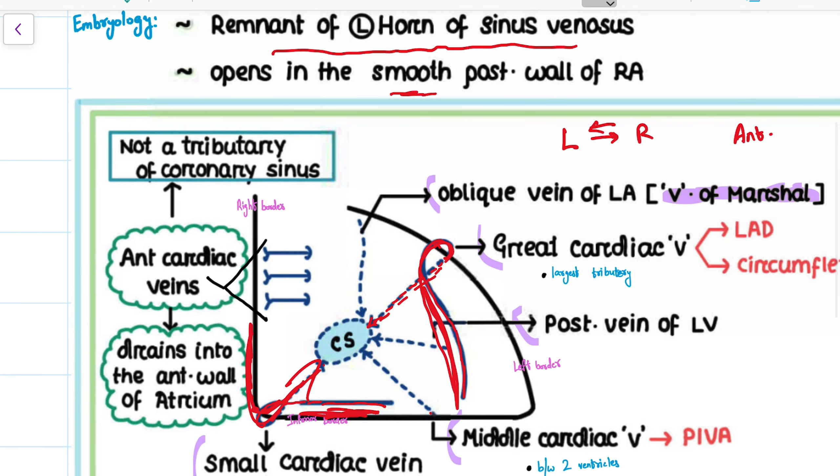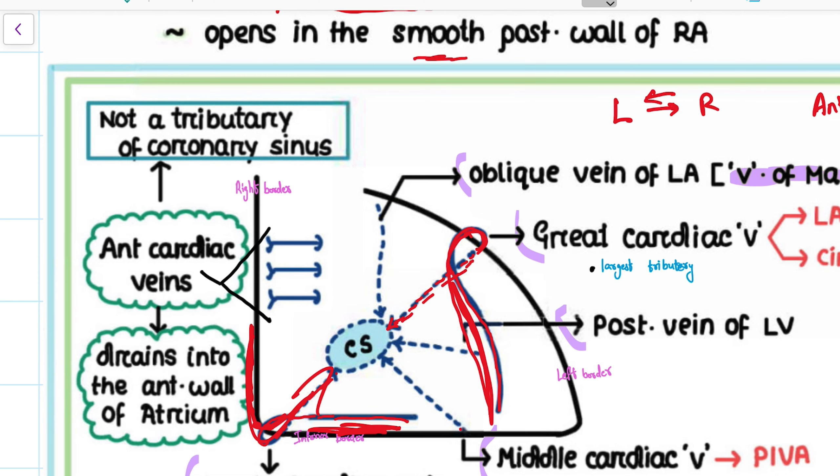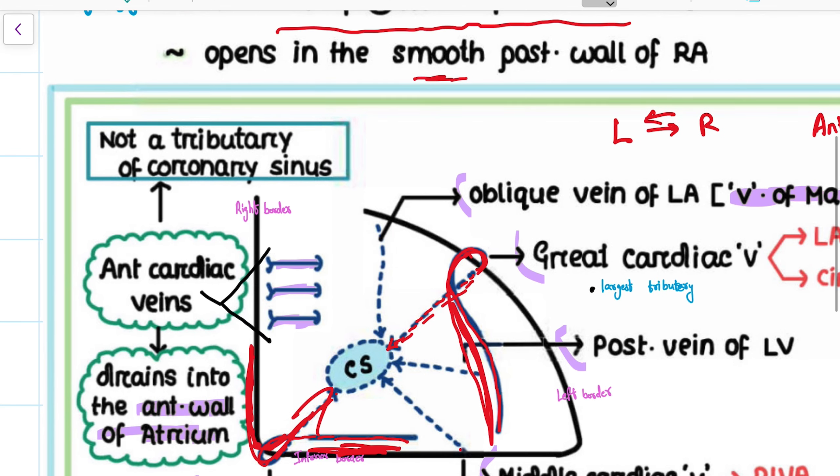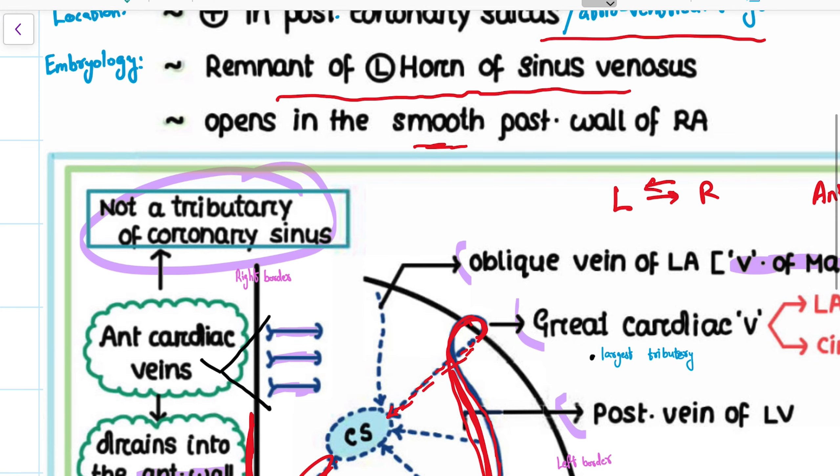There are some veins which do not, actually. Those are the anterior cardiac veins, which are present in the anterior aspect and drain into the anterior wall of the atrium. It is not a tributary of the coronary sinus, but is a part of the venous drainage system of the heart.